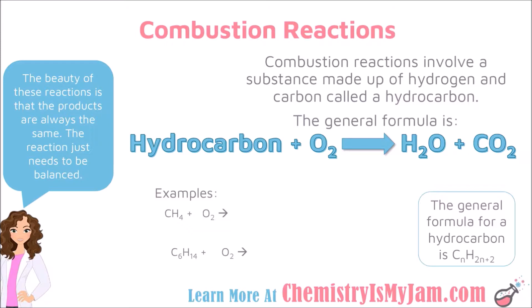So what is a hydrocarbon? A hydrocarbon is a compound made up of carbons and hydrogens covalently bonded together. Hydrocarbons follow this general formula: CnH2n+2. This means that for a normal hydrocarbon, if you know the number of carbons, you can predict the number of hydrogens.